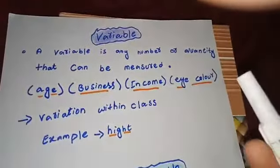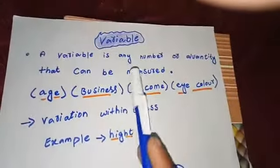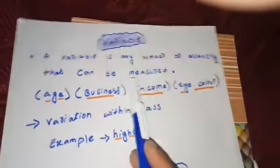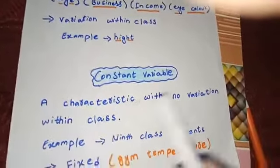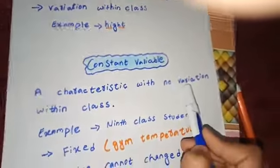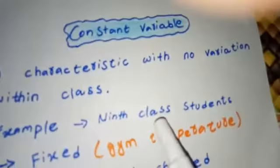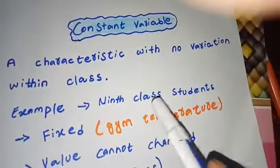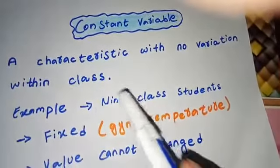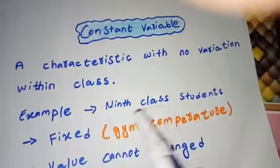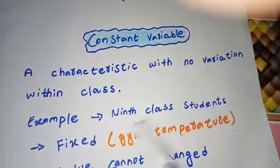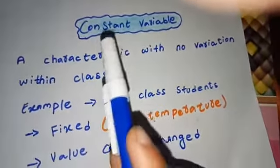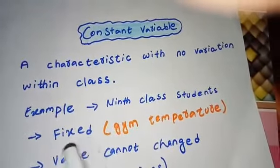A variable is any number or quantity that can be measured. The next concept is the constant variable. Constant variables are characteristics with no variation within a class. For example, we say 'ninth class students' — all students in that class are ninth class students, not tenth class. There is one term used for all students with no variation.